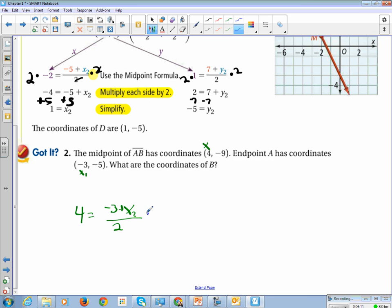So we're going to multiply both sides by 2. So our x-value of our coordinate is 11.